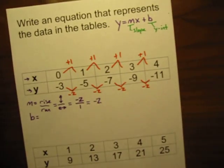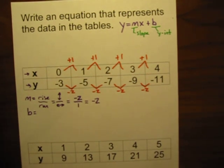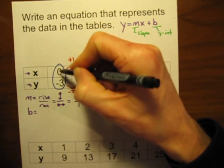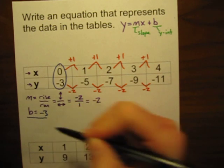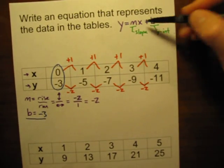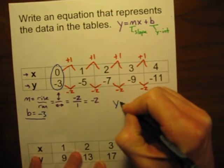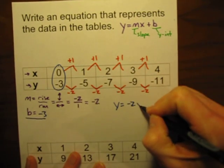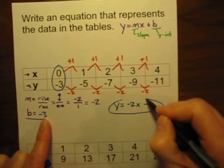Going back to our data table — when x is 0, the y coordinate is our y-intercept. In this table, when x is 0, y is negative 3. So b equals negative 3. Now we can write the equation: y equals negative 2 times x plus negative 3. There's our equation.